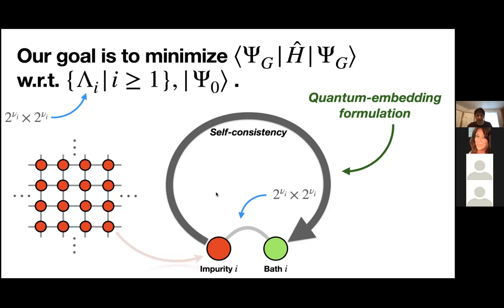The bath degrees of freedom and the coupling between bath and impurity must be determined self-consistently, so that after convergence it represents the interaction between the fragment and its environment — very much like DMFT. The complexity is not eliminated, only moved: the number of independent parameters of the lambda matrix equals the dimension of this system, because within the GA the bath has exactly the same size as the impurity.